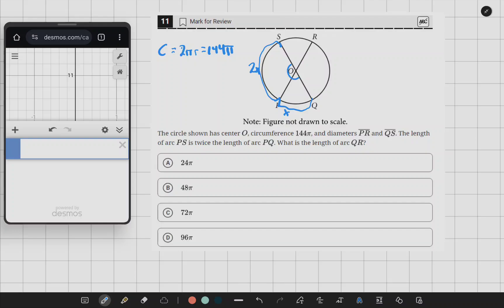So we'll start by solving this. The circumference, which is 144, is equal to 2πr. We're going to solve for the radius, and we get radius equals 72.